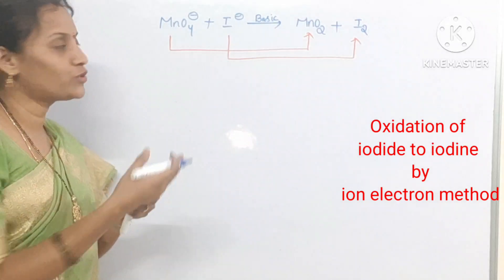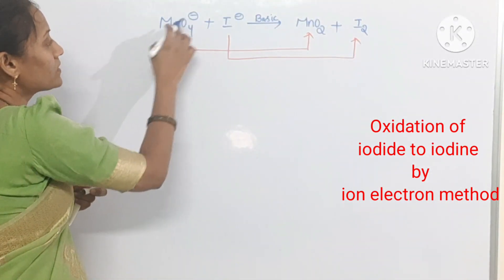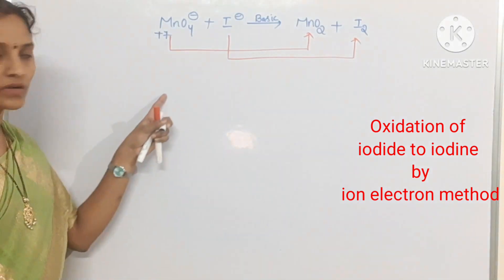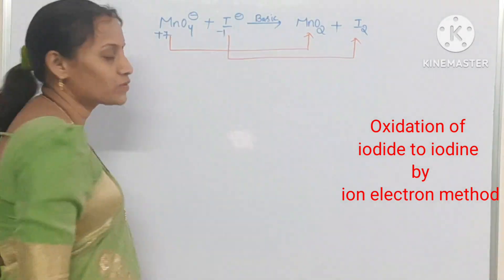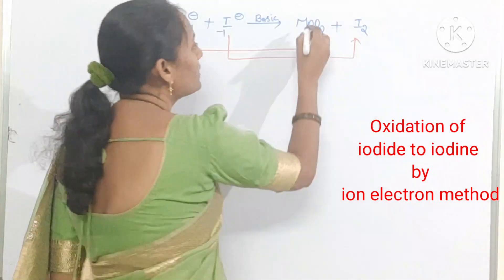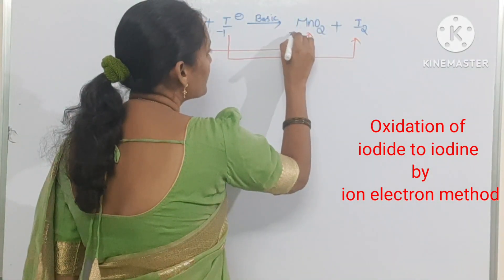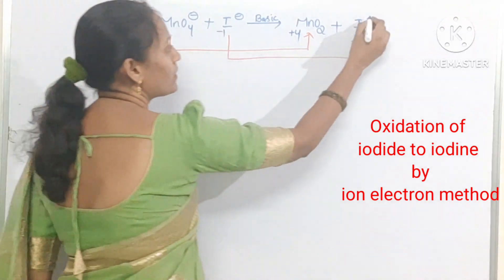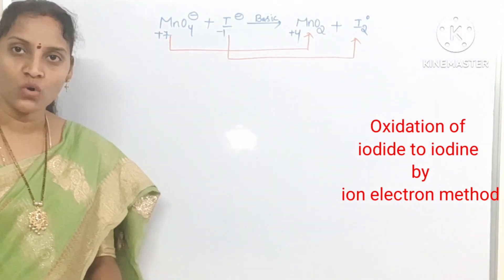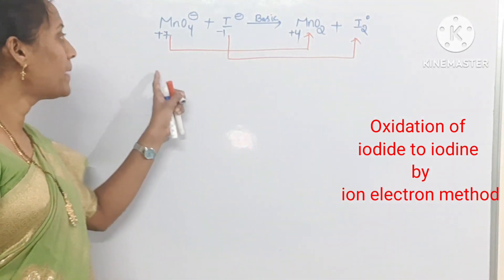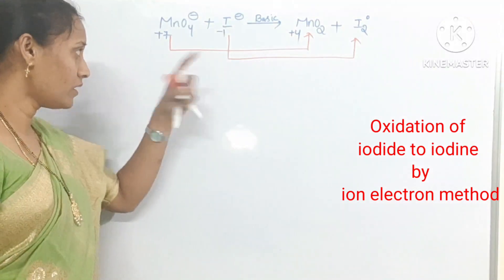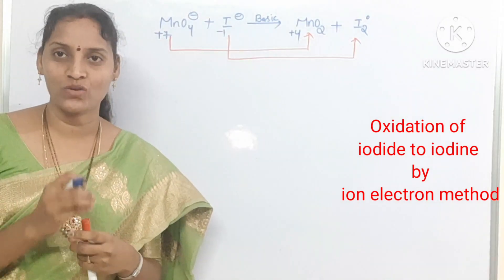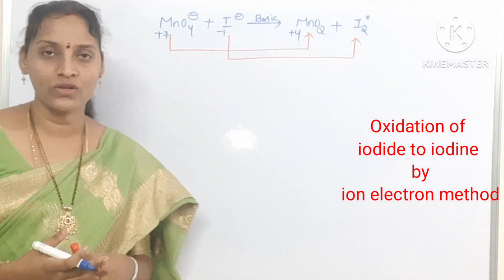Here, in MnO4⁻, Mn gets a +7 oxidation state. Iodine gets a -1 oxidation state. In MnO2, manganese gets a +4 oxidation state, and in I2, iodine has a zero oxidation state. By knowing this, you can try to identify how many electrons are transferred and how many electrons are released.